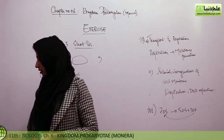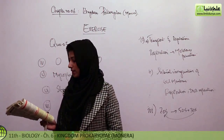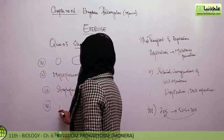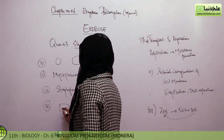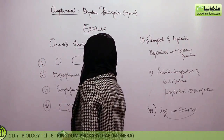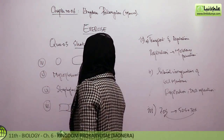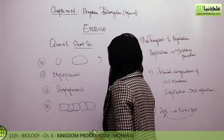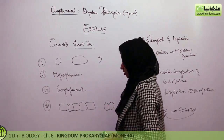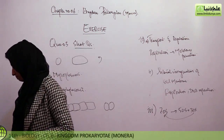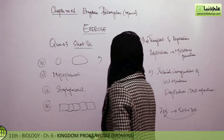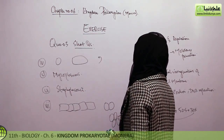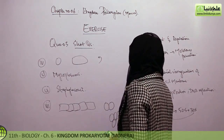Seventh: draw and label streptobacilli, diplococci, and staphylococci. Streptobacilli — bacilli in a long chain. Diplococci — two cocci together. Staphylococci — bunch-like arrangement.